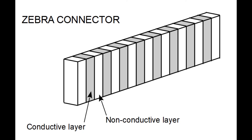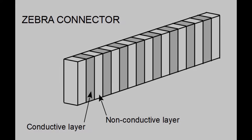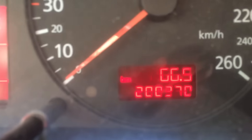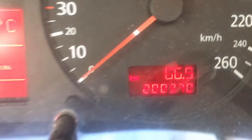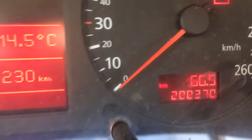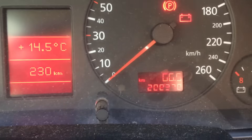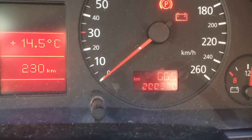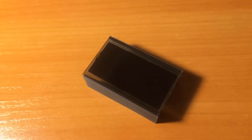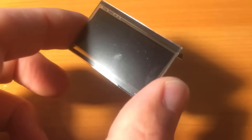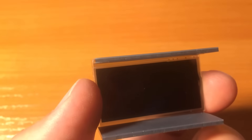First let's look at how we can fix the connection problem for a screen that has zebra connectors. Here's my car's odometer screen and you can clearly see that it has some problems. Let's remove the screen with zebra connectors from the dashboard.